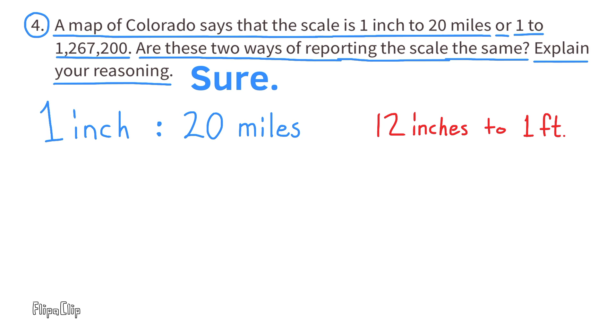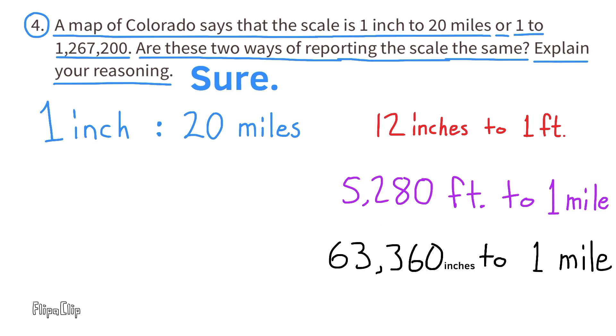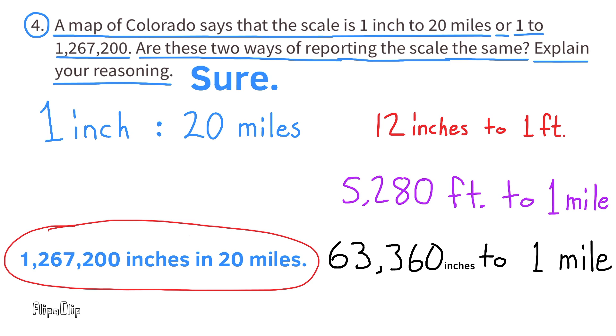And I looked it up and discovered that there are 5,280 feet to every mile. We can multiply 5,280 feet times 12 to find out how many inches would be in one mile. So there's 63,360 inches in one mile. Now all we have to do is multiply 1 mile times 20 to get 20 miles, and multiply 63,360 inches times 20, and we discovered that there's 1,267,200 inches in 20 miles. So to say that the scale is 1 inch to 20 miles, or 1 to 1,267,200, either one would be correct. So they are the same.